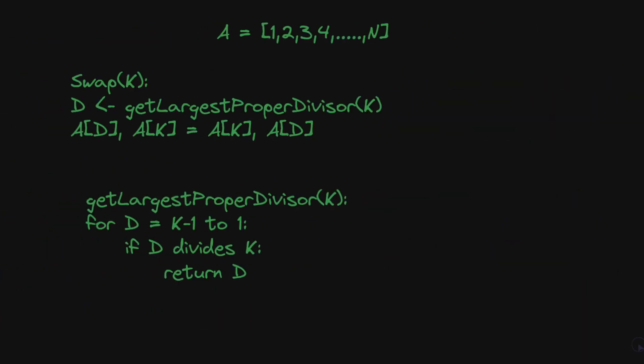Moving on to formally defining the problem statement. We are given an integer n and the array is initially 1 to n. The swap k operation is defined as first get the largest proper divisor of k. A proper divisor is one of the divisors of a given number which is not equal to itself. Since we need the largest one we can start from d equal to k minus 1 to 1. If the current d divides k we return that number. This loop will definitely terminate because the smallest number is 1 and 1 divides every number.